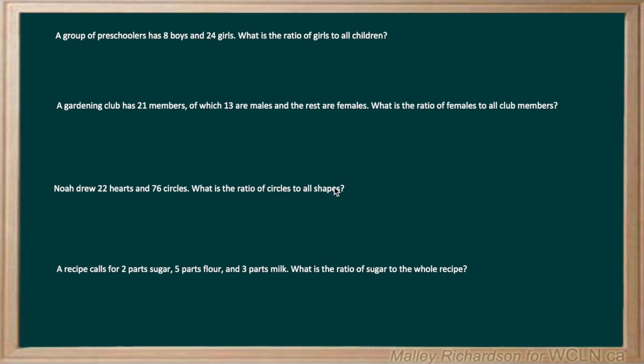We have a group of preschoolers that has 8 boys and 24 girls. What is the ratio of girls to all children? So we first have to find the number of girls, and then we have to find the number of all the children. The girls are going to be our part, and then all the children are going to be our whole.